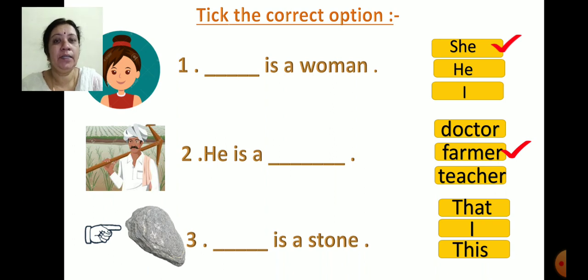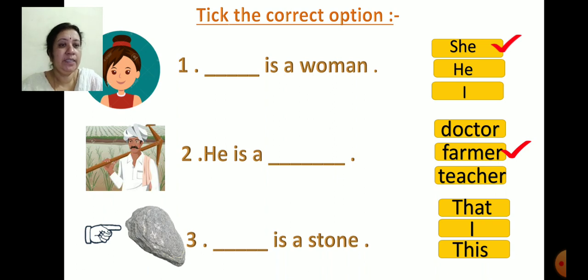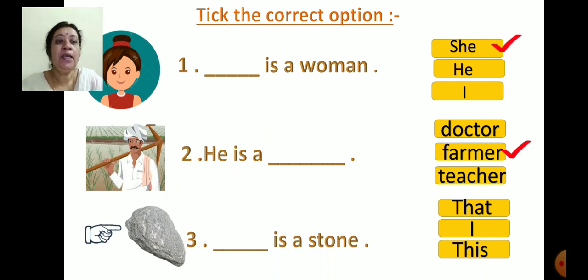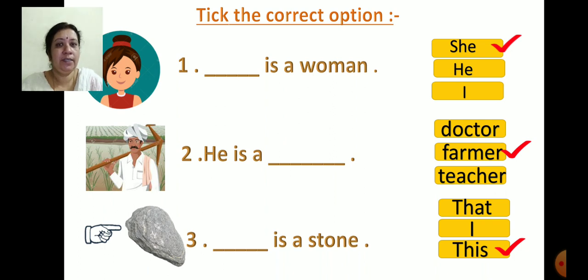Now read the third one: 'Dash is a stone.' The options are That, This, and I. We have learned when to use 'this' and when to use 'that'. 'This' is used when the object is near to us; 'that' is used when the object is far from us. In this picture, the object is near, so we are using 'this'. Click on 'this'. Okay, children?